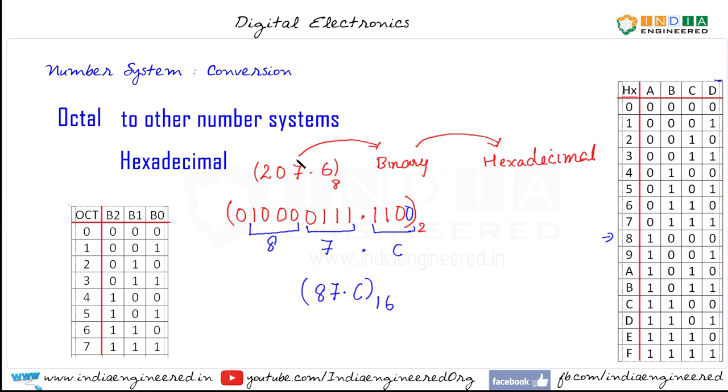So what we did is we converted the octal number to binary. Then from binary we converted it into hexadecimal. So this is the easiest method to convert from octal to hexadecimal. Now let's see the conversion from hexadecimal to other number systems.